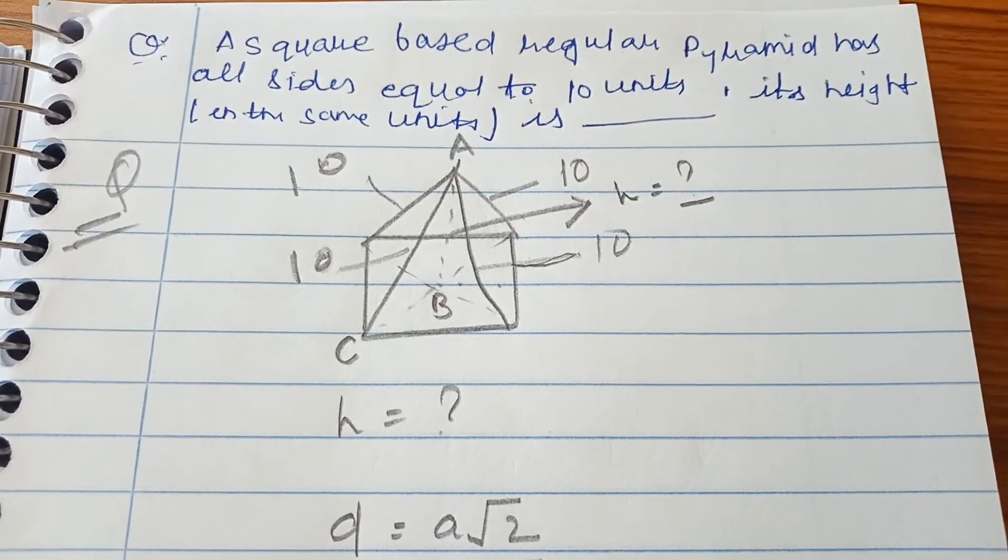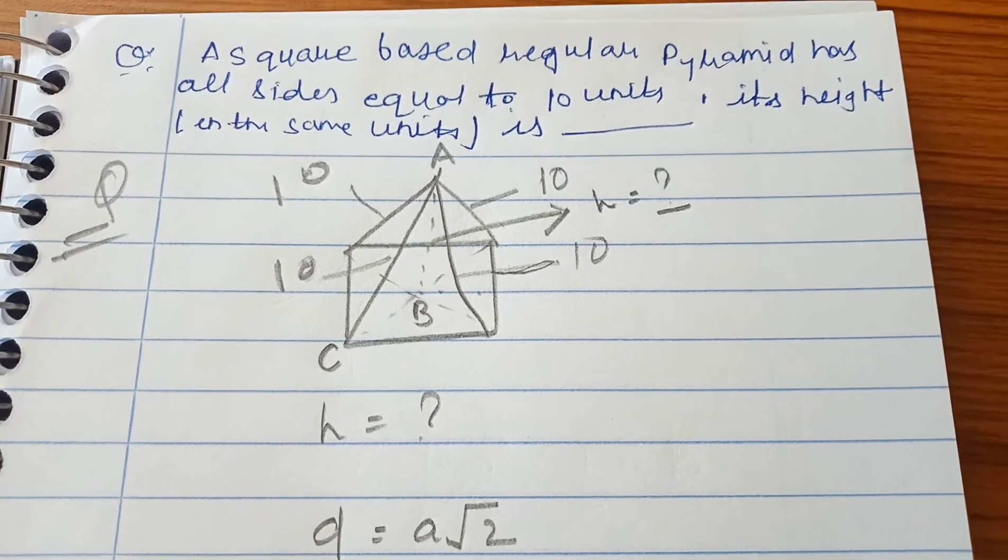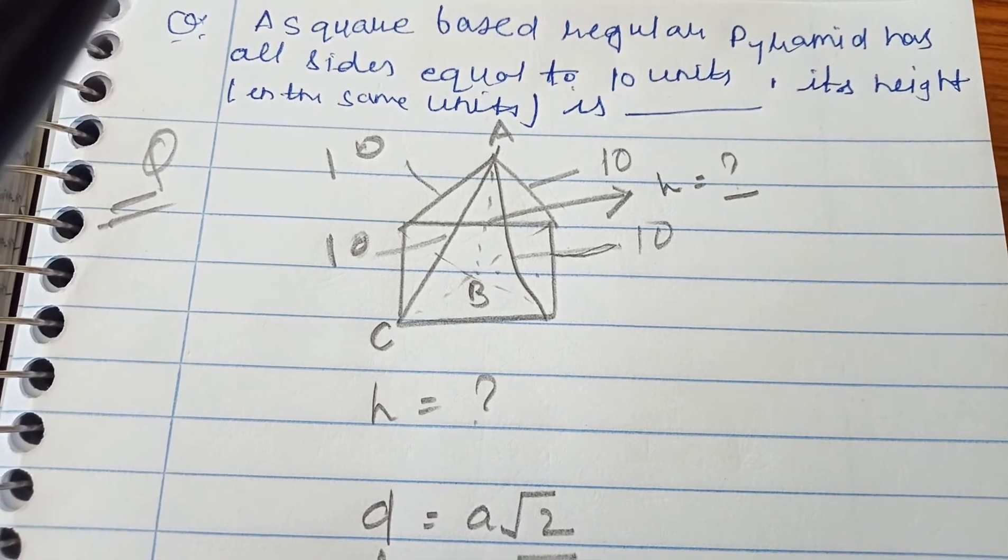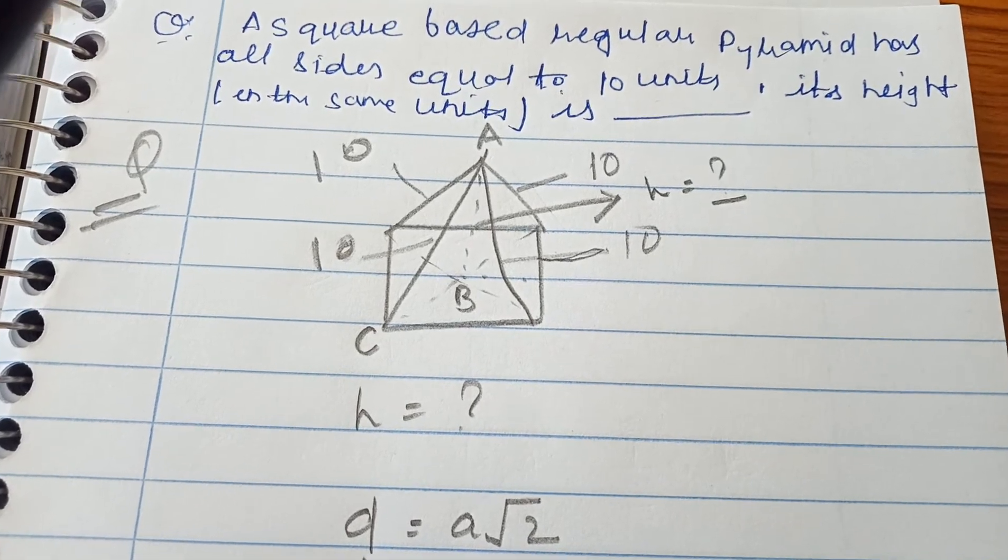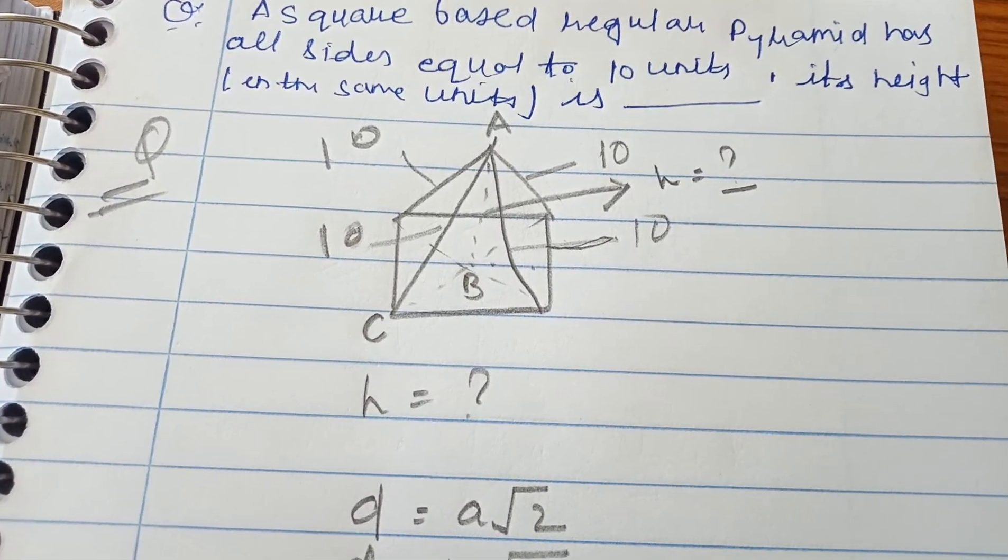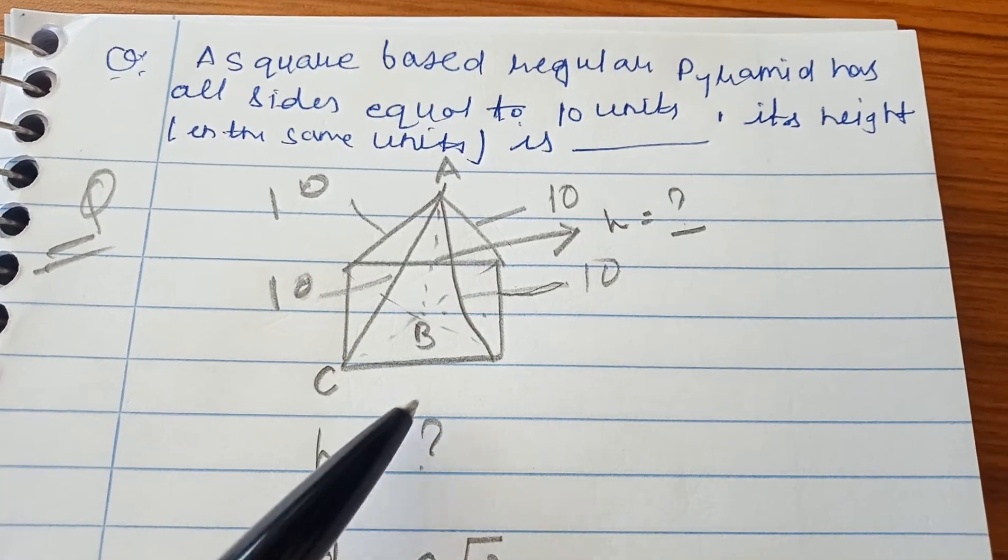Hello all. The next question is about a square-based regular pyramid with all sides equal to 10 units. Its height, in the same units, we have to find out. So let's consider this pyramid here where all the sides are equal to 10 units.